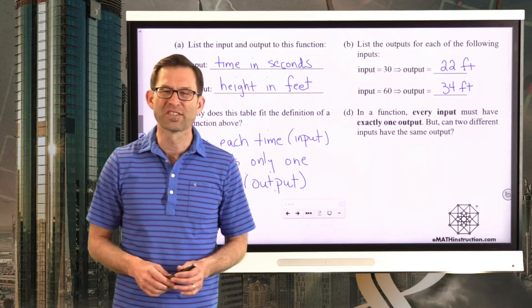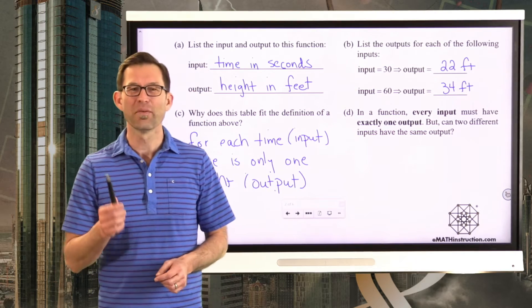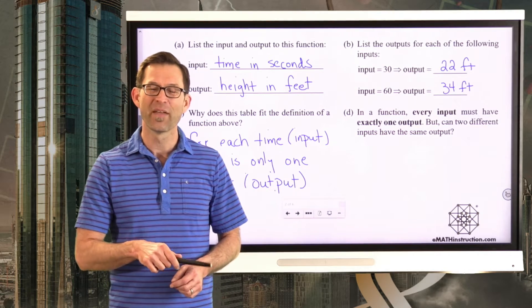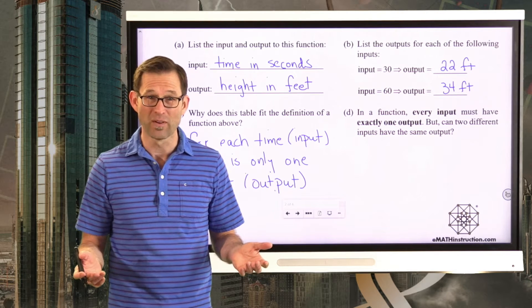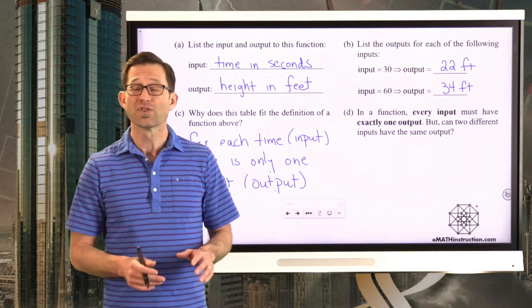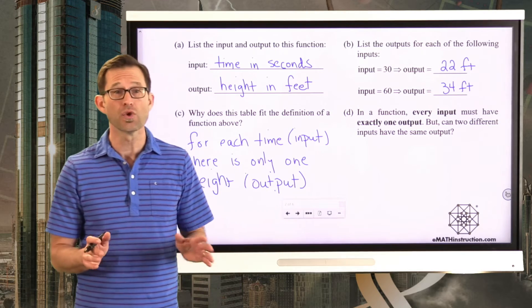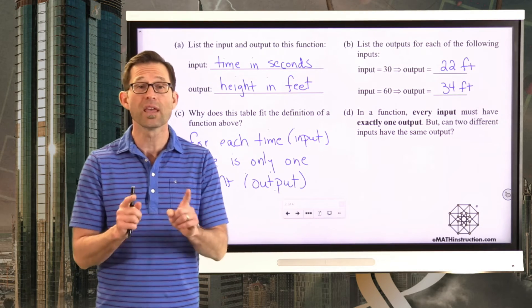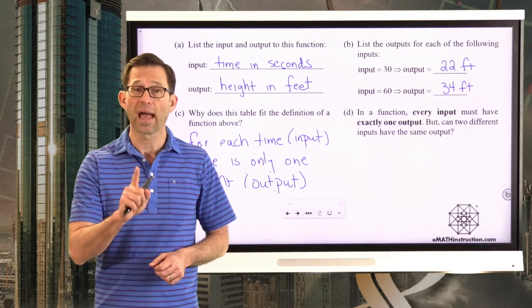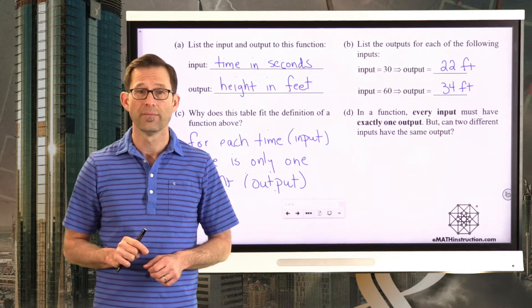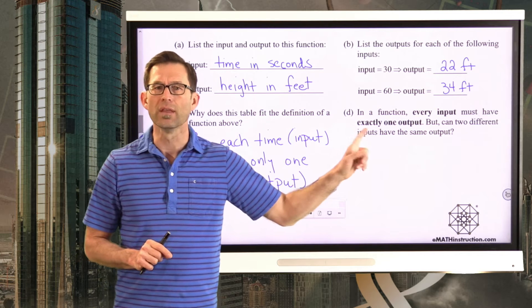And it'd be a little weird if somehow the ball could be at two different heights at the same time. I mean, quite frankly, that's physically impossible. So it really makes sense that this is a situation where the height is a function of time. For any given time, there's exactly one height that the ball is at. But let's take a look at letter D. This is very important.